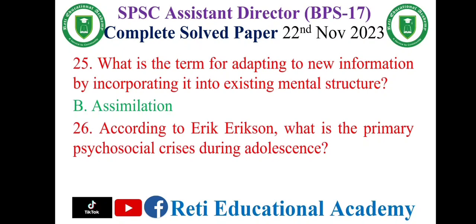Question number 26: According to Erikson, what is the primary psychosocial crisis during adolescence? The correct option is C — Identity versus role confusion.